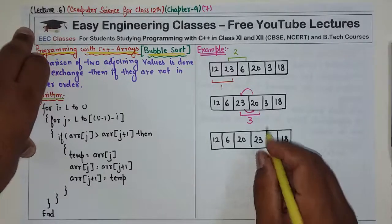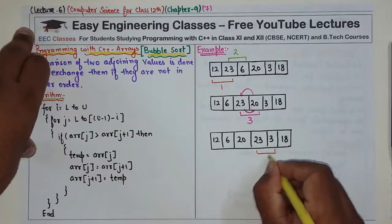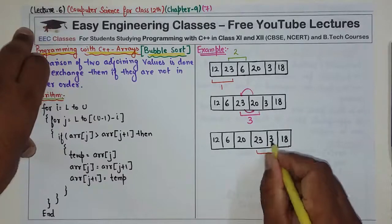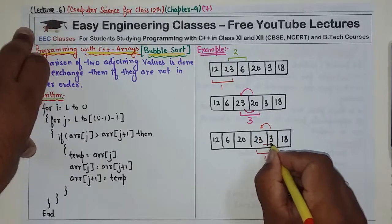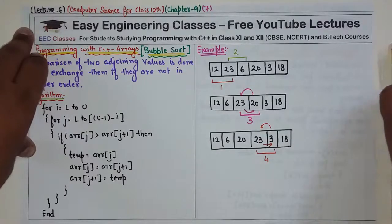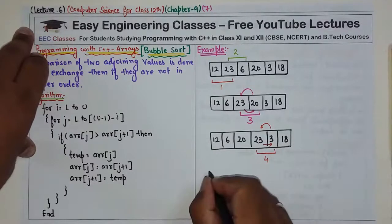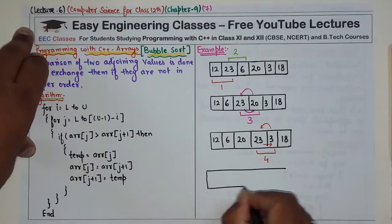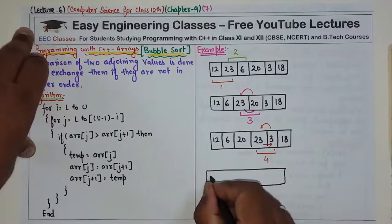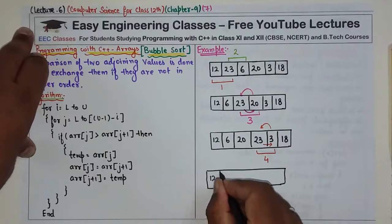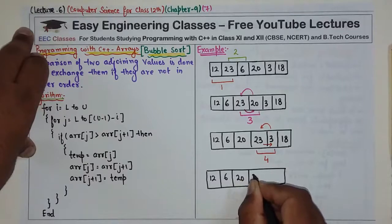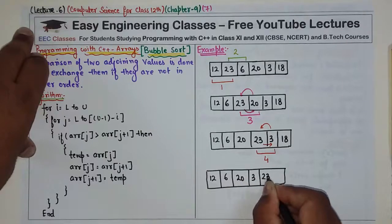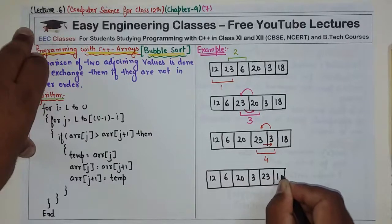One more comparison — the fourth comparison. 3 is smaller than 23, so we interchange. This will become: 12, 6, 20, 3, 23, and 18.